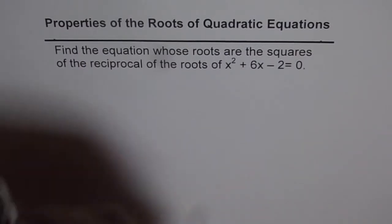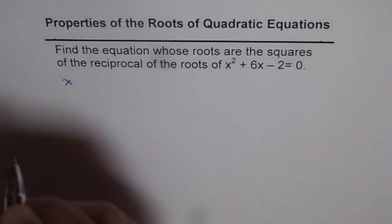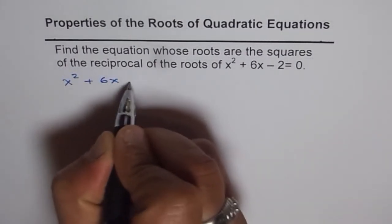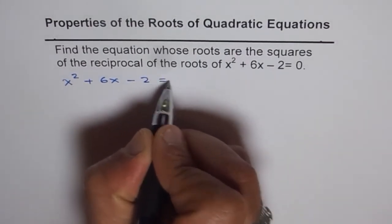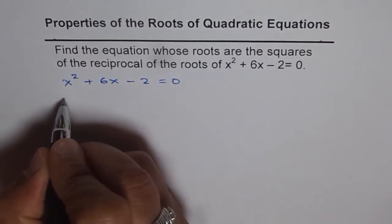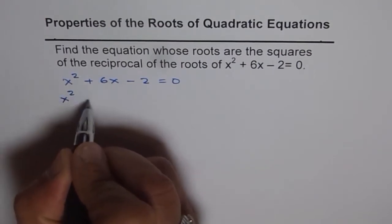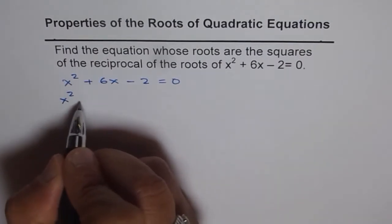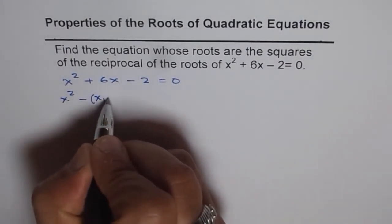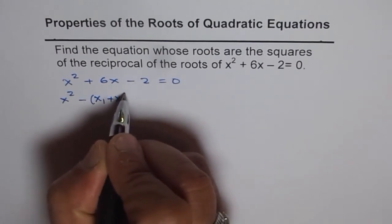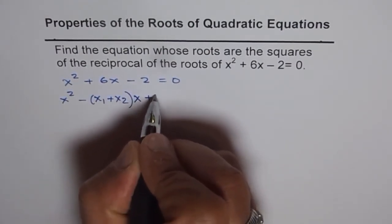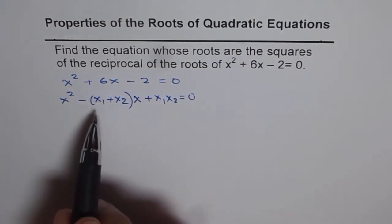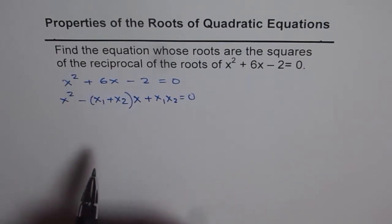Let's write down this equation in terms of its roots and then solve it. We have x² + 6x - 2 = 0. In terms of its roots, we can write this as x² - (x1 + x2)x + x1·x2 = 0. That is the equation in terms of its roots x1 and x2.